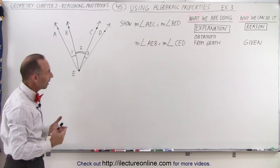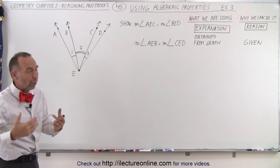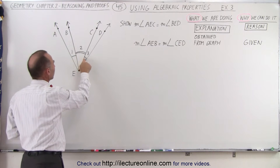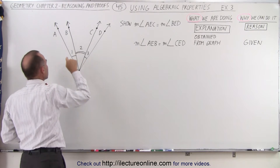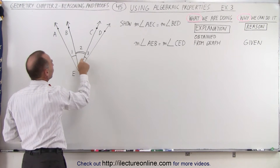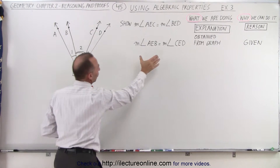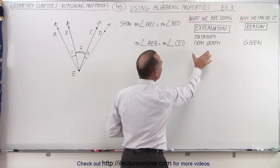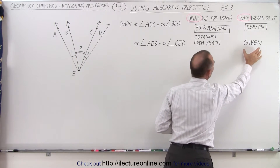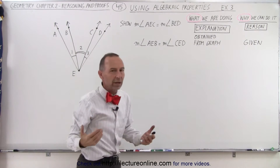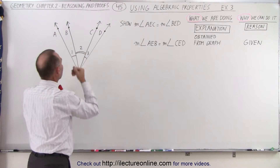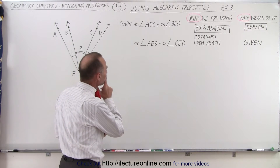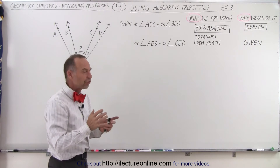We're required to show that the measure of angle AEC is equal to the measure of angle BED. Let's try to find a way to prove that. We're going to start with the initial statement shown on the graph: the measure of angle AEB is equal to the measure of angle CED. We can obtain that directly from the graph and consider it a given quantity.